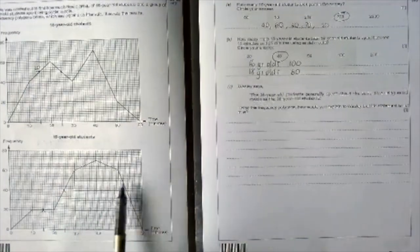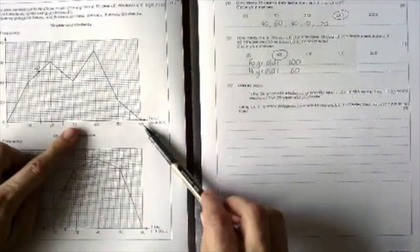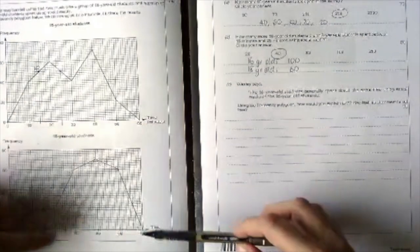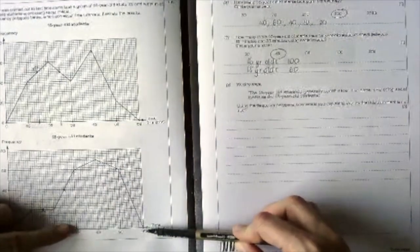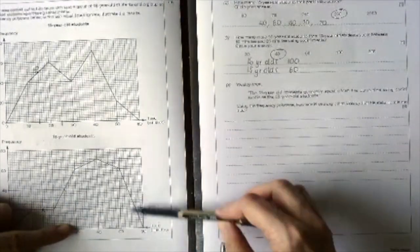We're basically going to try and describe what is happening and saying that they don't spend the same amount of time. You can see from here this top end of the graph between 30 and 60 minutes, clearly the 18-year-old students spend more time because their graph is up here.